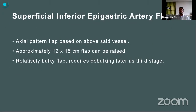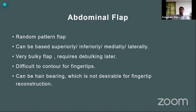Another distant flap is the superficial inferior epigastric artery flap — also an axial pattern flap based on that vessel. A relatively smaller flap of about 12 by 15 cm can be harvested. It is a bulky flap as it takes the fat of the abdomen and requires debulking as a third stage. The abdominal flap is a random pattern flap, which can be based superiorly, inferiorly, medially, or laterally. It is very bulky, requires debulking, is difficult to contour for fingertips, and can be hair-bearing depending on the patient — which is not desirable for fingertip reconstructions.